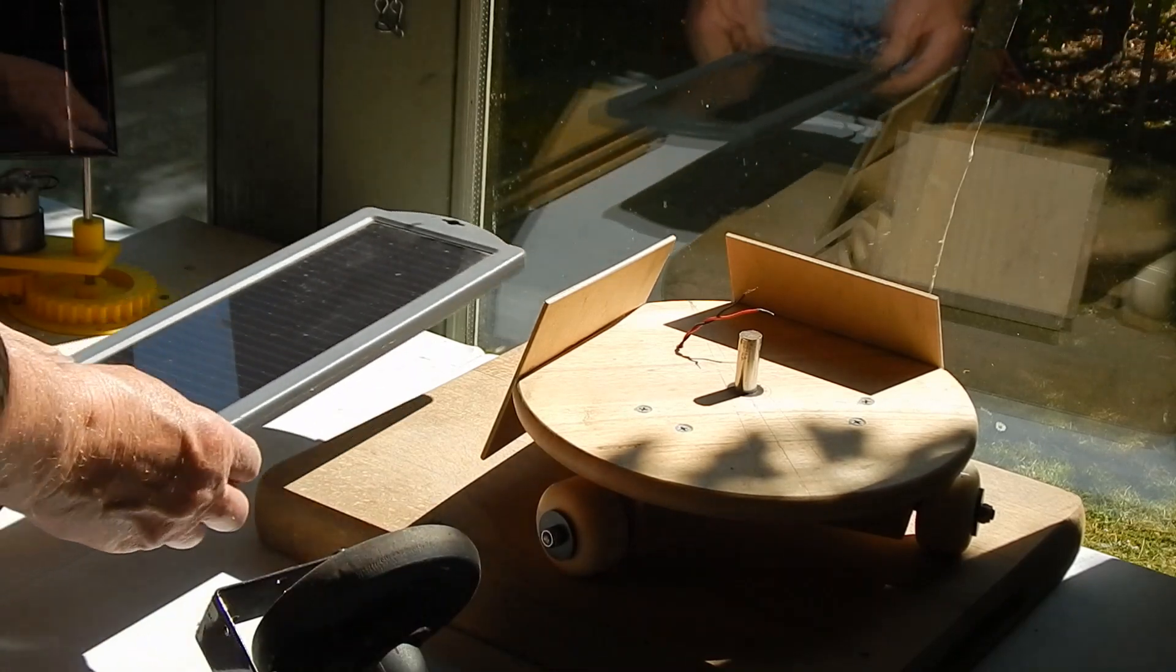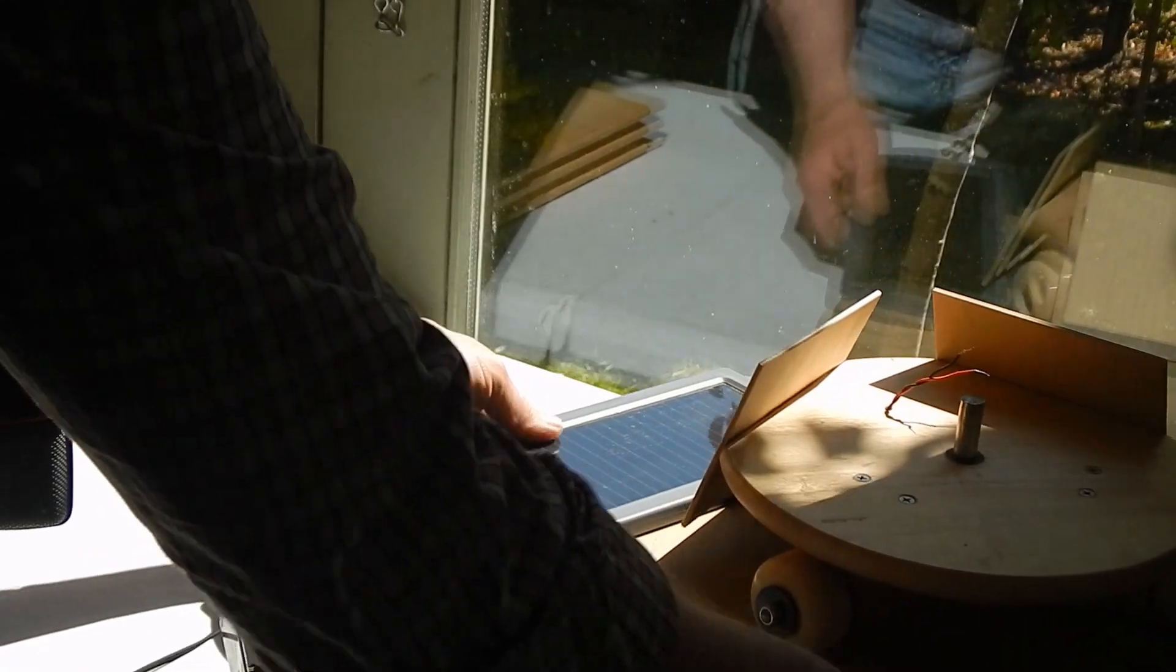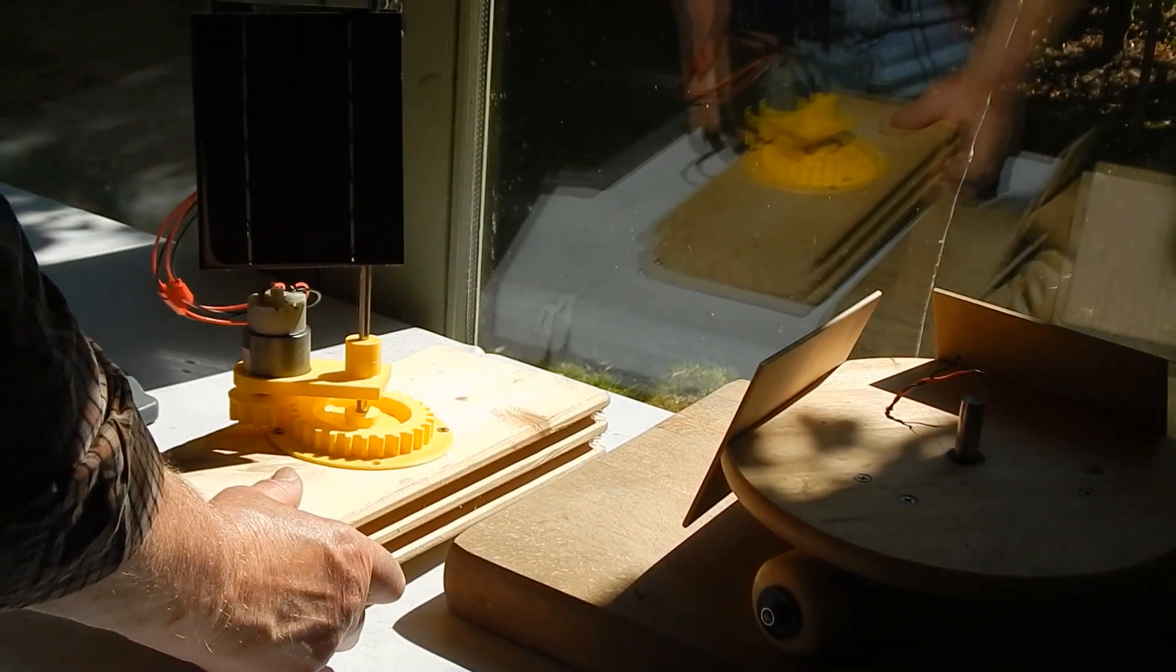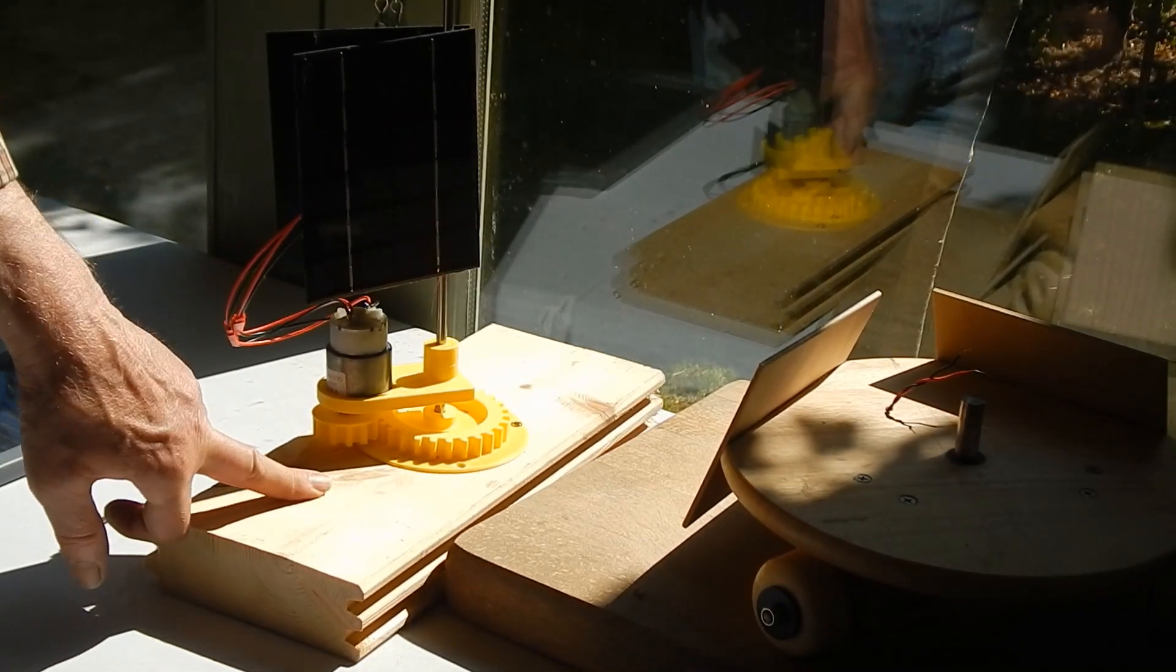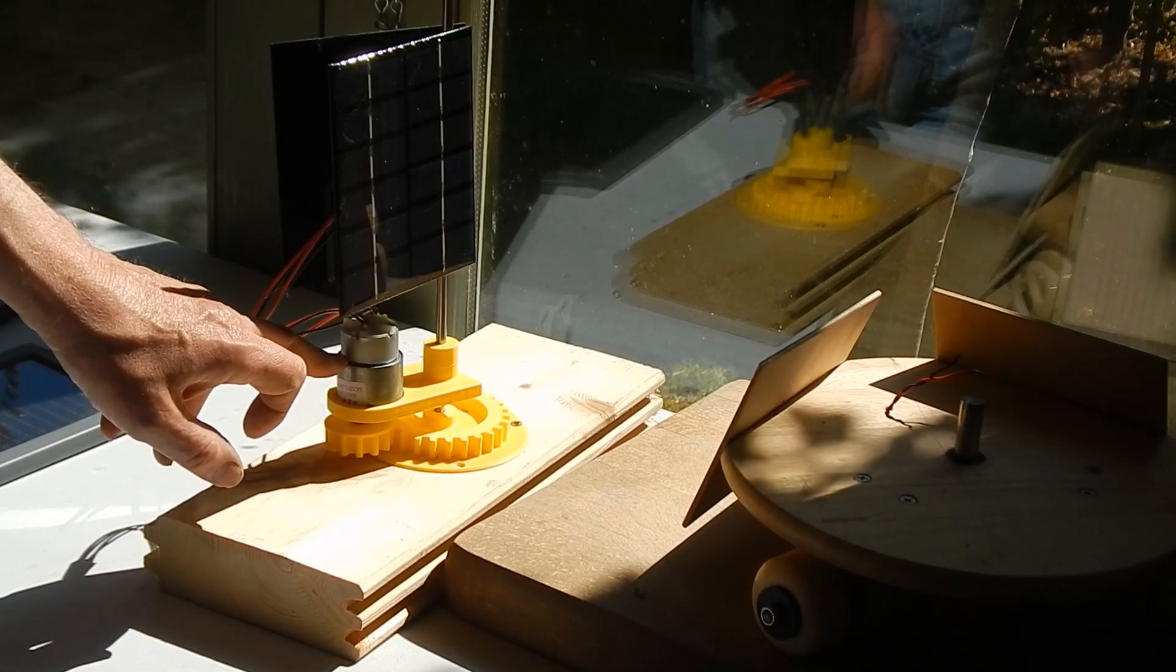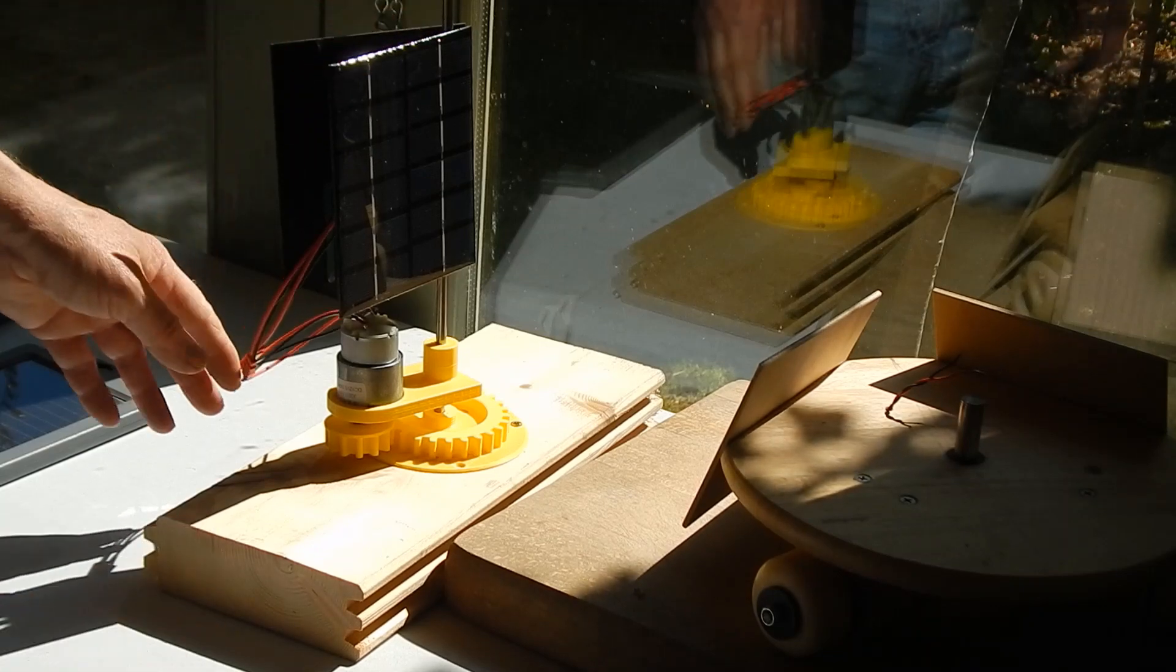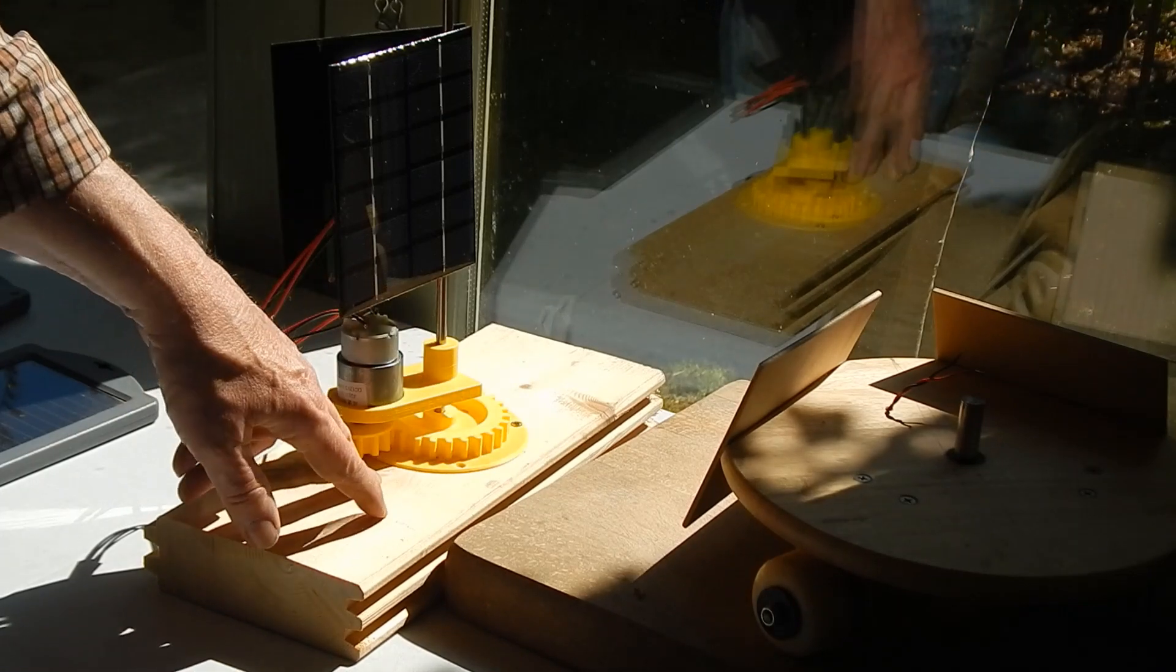And that's how they work. It's very very simple. You cannot get a simpler method. Costs nothing, there's no Arduino, programming, power supply. It's reliable, it's cheap. The motors are about five or six pounds, the panels four or five pounds each, and this you can make up as you go along. Can be a skateboard wheel, can be a gear, anything you like.